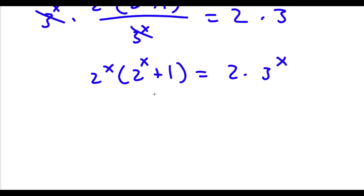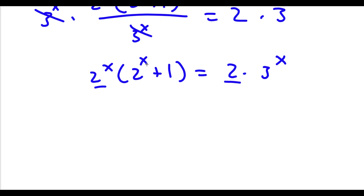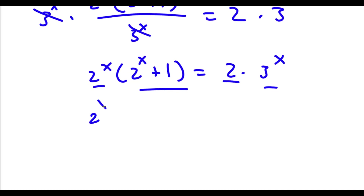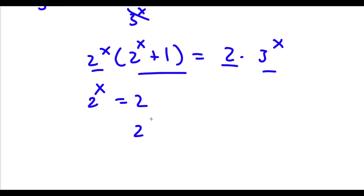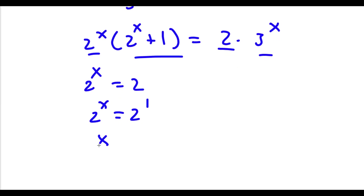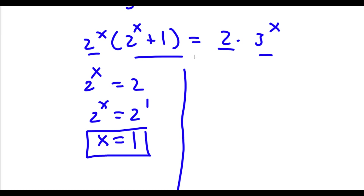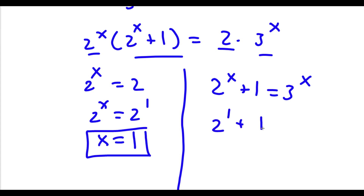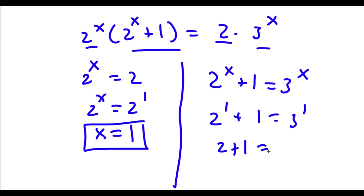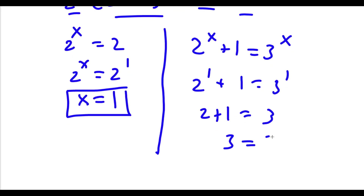So now I can set 2 to the power of x equal to 2, and 2 to the power of x plus 1 equal to 3 to the power of x, because this is in the form a number times a number is equal to a number times a number. So we could say 2 to the power of x is 2, and 2 to the power of x plus 1 is 3 to the power of x. Now 2 is the same thing as 2 to the power of 1, so if 2 to the power of 1 is equal to 2 to the power of x, then x has to equal 1. That is one solution. Now to verify the other equation, 2 to the power of x plus 1 equals 3 to the power of x — we plug in x equals 1: 2 to the power of 1 plus 1 equals 3 to the power of 1, which gives 2 plus 1 equals 3, so 3 equals 3. Our solution is confirmed.